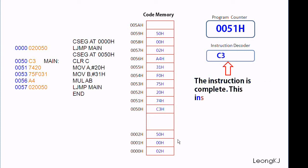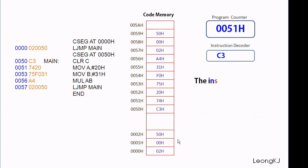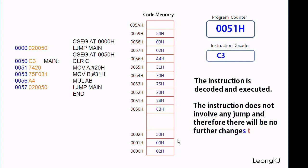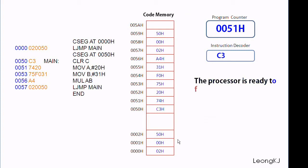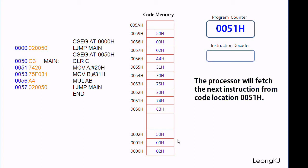The instruction is complete. This instruction actually means CLR C. This can be seen from the assembly instruction. The instruction is decoded and executed. The instruction does not involve any jump, and therefore there will be no further changes to the PC. The processor is ready to fetch the next instruction from code location 0051.